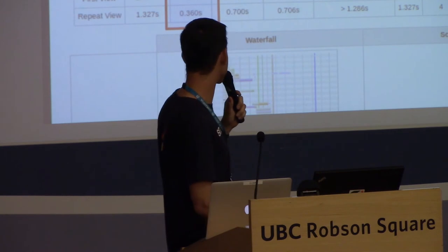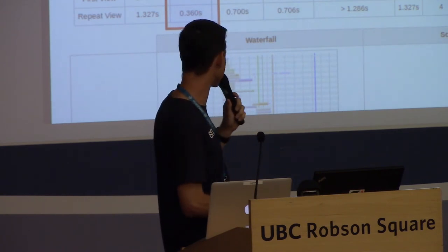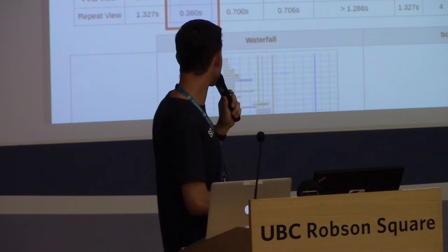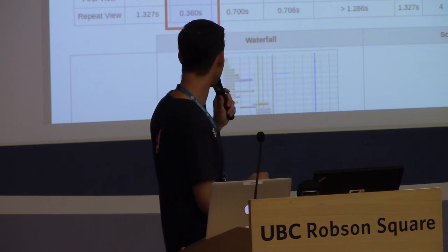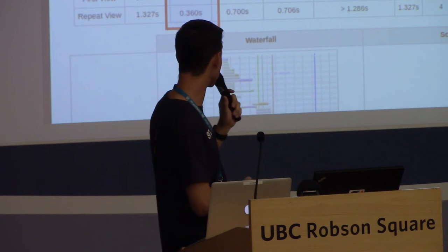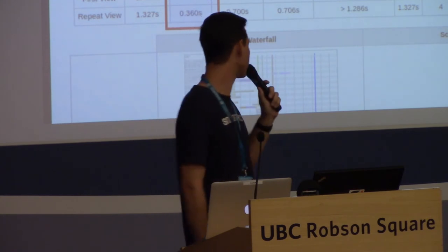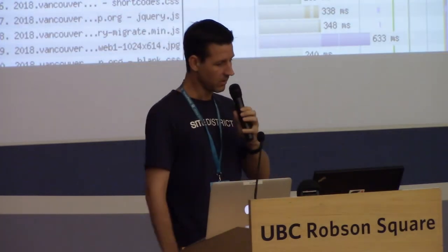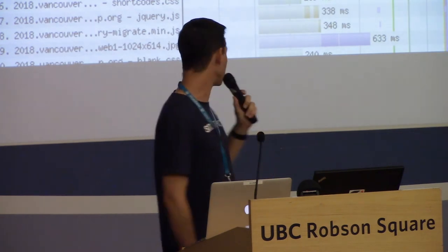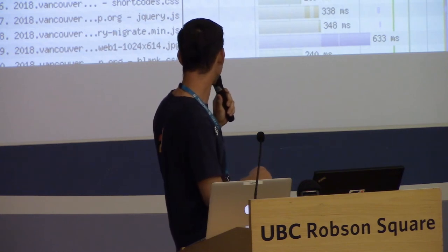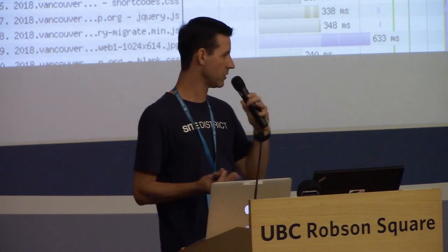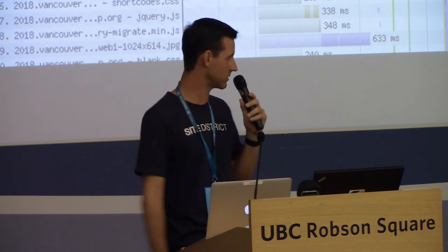The WebPageTest results give you letter grades right up front, including a grade for Time to First Byte. Anything under about 500–600 milliseconds gets an A. The Time to First Byte is listed prominently and also in the table for both test runs. You can also click in for a full waterfall view — similar to the diagram I showed earlier but for your actual site, with much more detail.